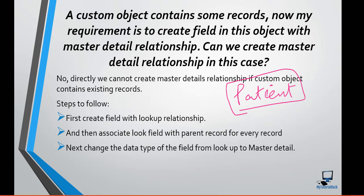You cannot create a master-detail relationship directly. First, you create a lookup relationship — and as you know, a lookup relationship field is not a required field, so you will be able to create it. Then you go to each of those records and associate the lookup field with the parent record for every record. Once done, you change the data type of the field from lookup to master-detail.